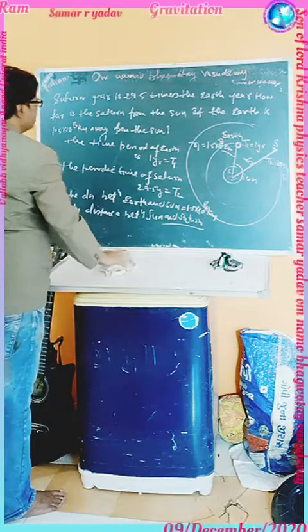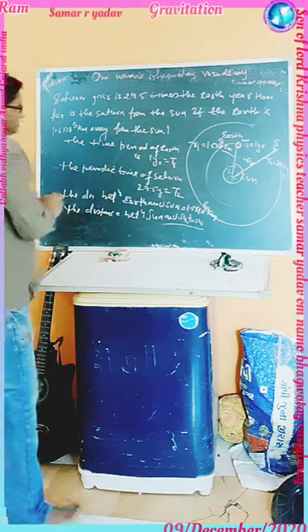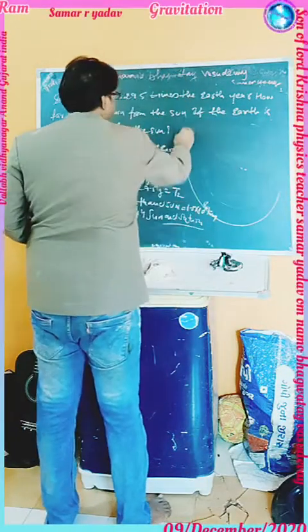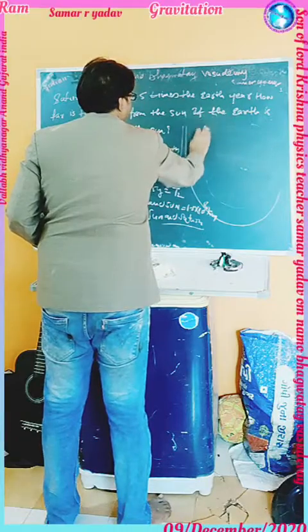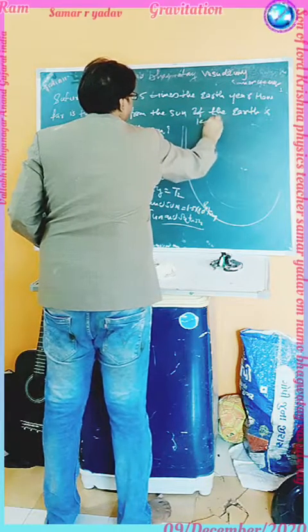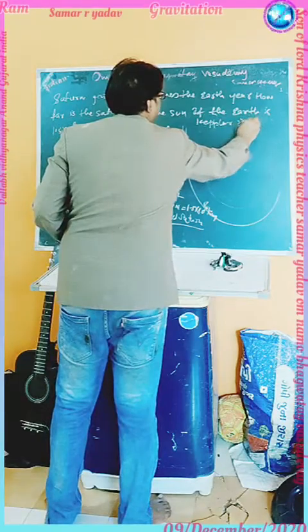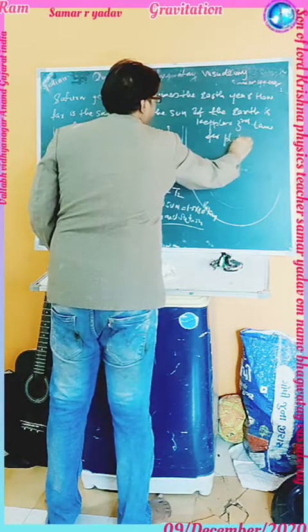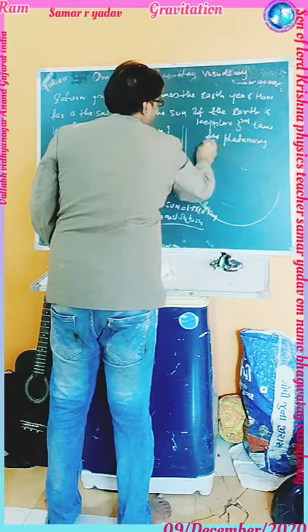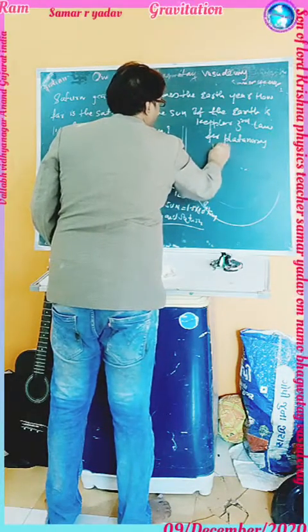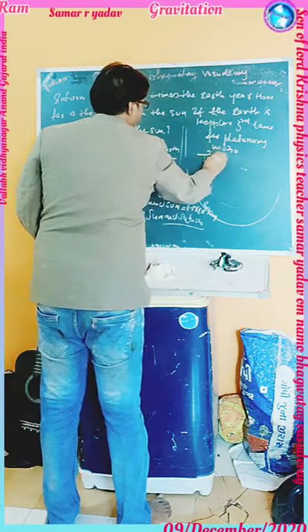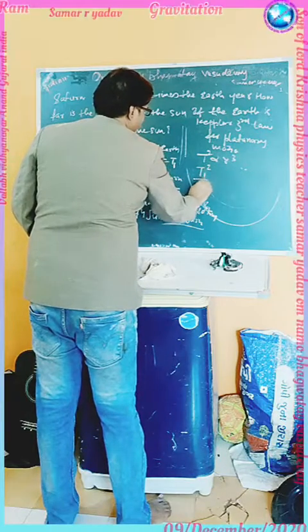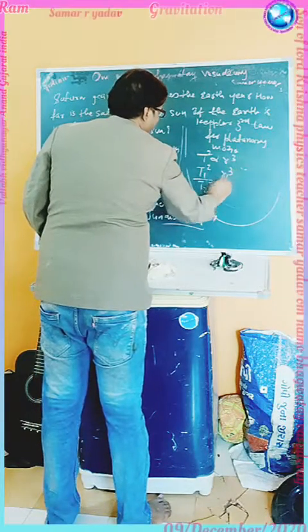We will use Kepler's third law of planetary motion. According to this formula, T² is proportional to R³. Therefore, T1² / T2² = R1³ / R2³.